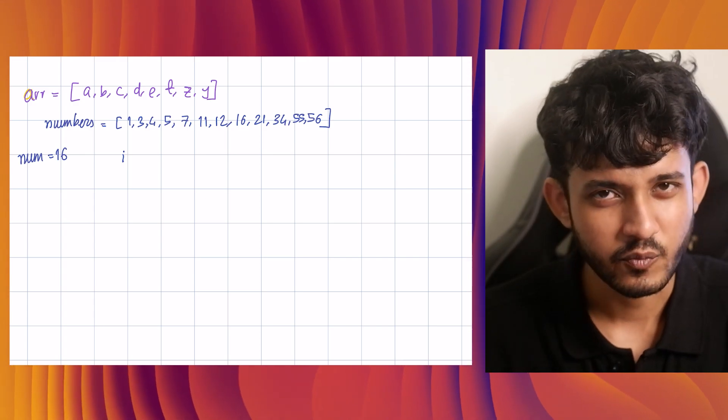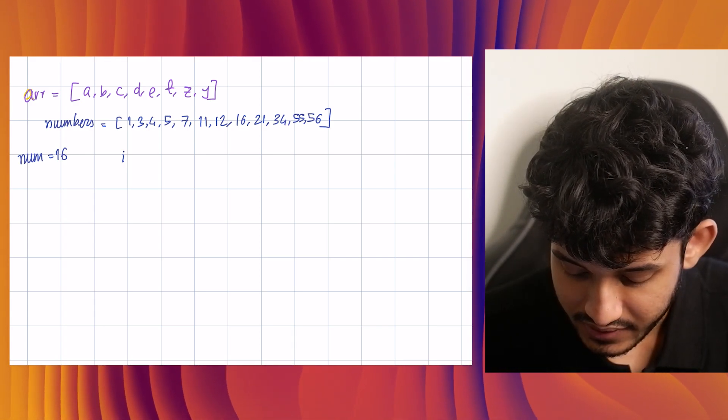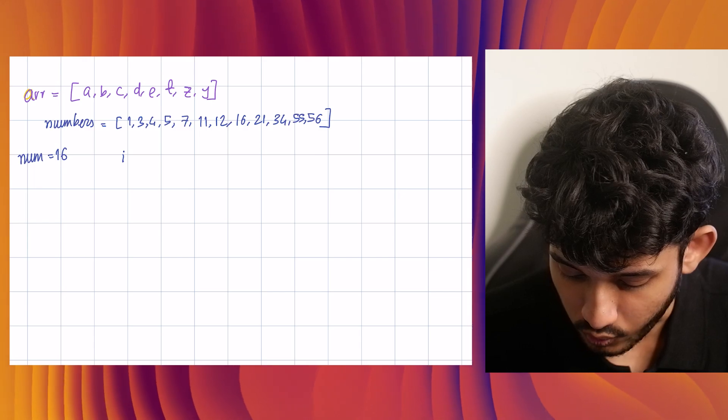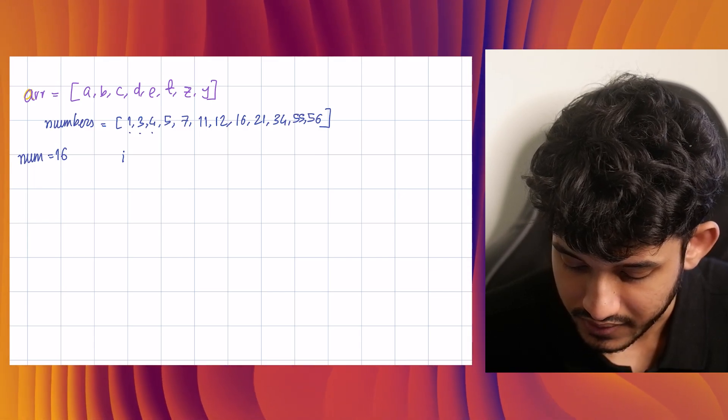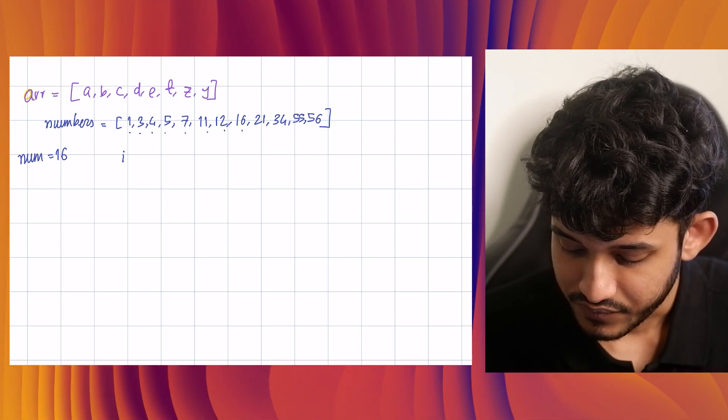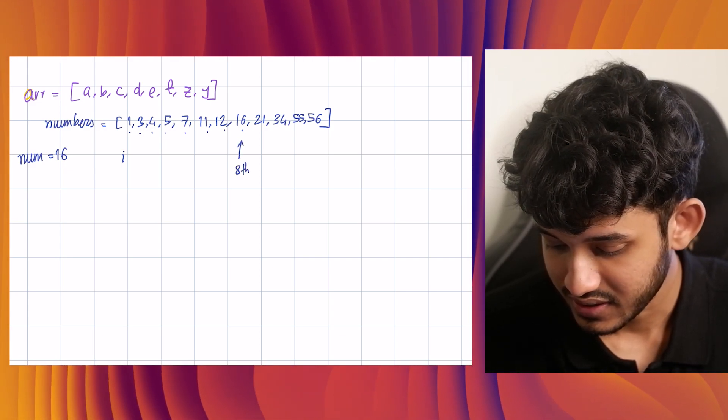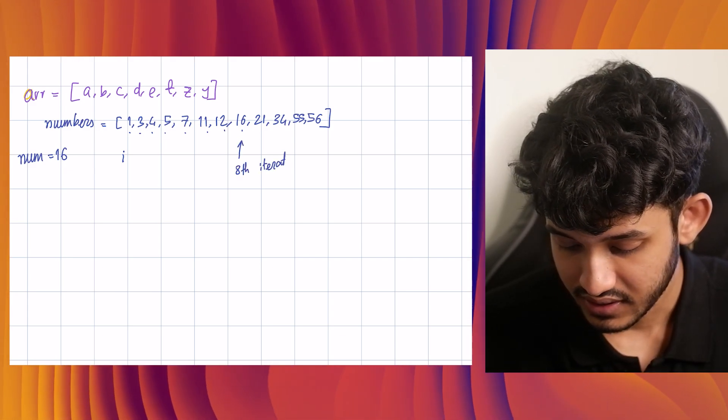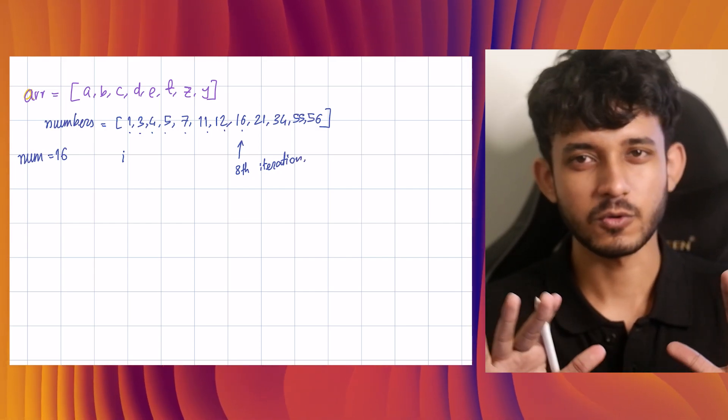How much time will this take is the point. So we will have to check like one, two, three, four, five, six, seven, eight. On the eighth iteration, we will find 16 and that will be it.